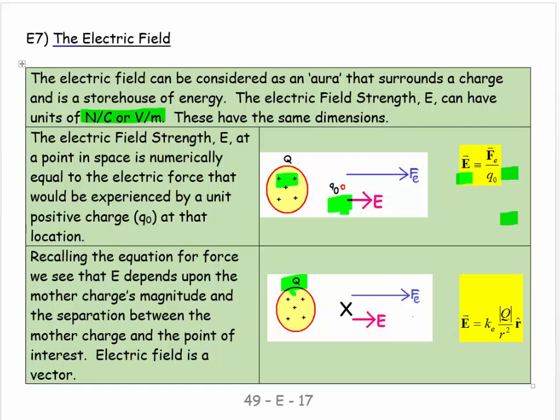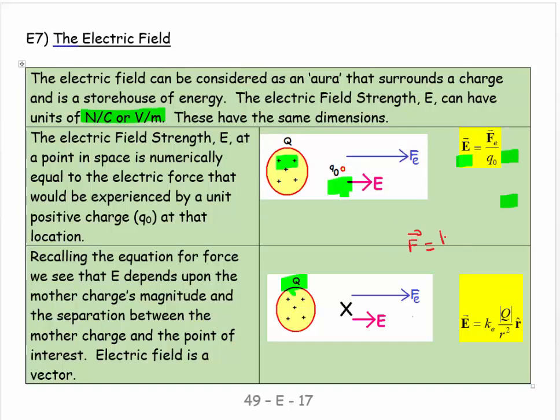So if we recall this, what we said for force, we said the force is equal to ke the mother charge times the little charge over r squared times the unit vector. And we just realized that we can get the electric field by dividing the force by the little charge, which means we divide by the little charge, which means that these guys go away. And so I get this equation down here where the electric field is equal to ke coulombs constant times the mother charge over r squared times a unit vector, which gives me the direction.